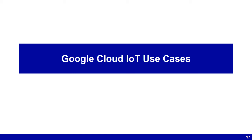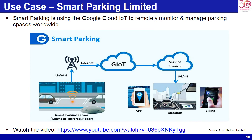This section provides some notable use cases of Google Cloud IoT. Smart Parking Limited is using Google Cloud IoT to remotely monitor and manage parking spaces worldwide, by connecting parking monitoring devices to Cloud IoT Core. They have a secure and reliable way to not only ingest that data, but also use it to gain valuable insights — knowing exactly how their systems are performing and pushing updates to devices to ensure delivery of the best services. Please watch the BBC News video on Smart Parking.